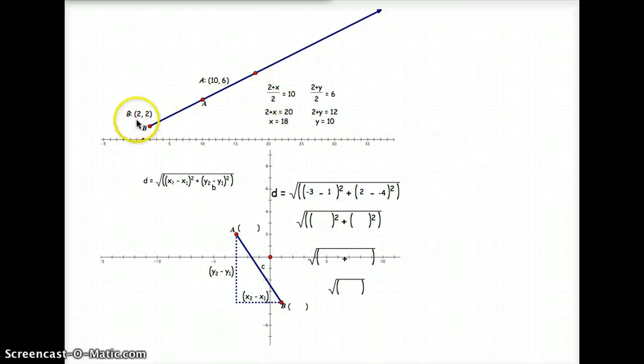In this case, I have one end point, which is 2, plus an unknown value. Again, that's unknown, so I'm going to leave it as x divided by 2 equals my x value of my midpoint, which is 10.